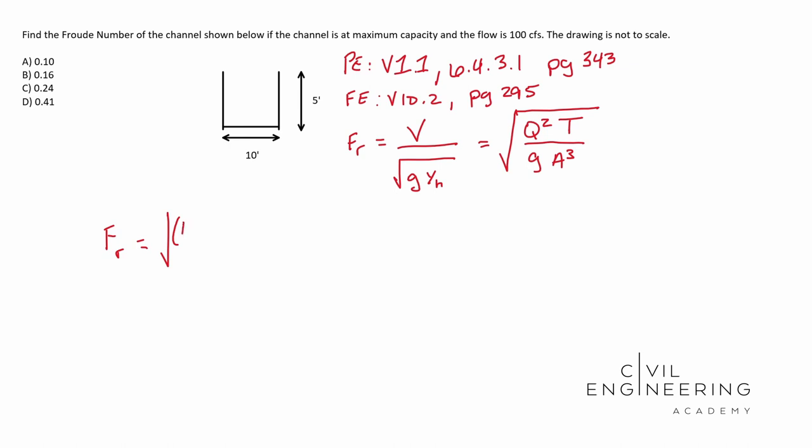This flow rate is going to be 100 cubic feet per second. Always write out your units so you don't screw up your units. T is the width of our water surface. Well, we're going to assume that the water is going to work with gravity. And so it's going to look something like this. It's maximum capacity.